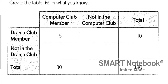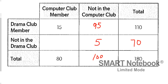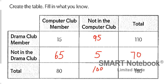The last question: we have to fill in the missing information. The total in the bottom right is 180, and drama club members total 110, so the missing number is 70. The computer club has 80, so not in the computer club must be 100. Of the 110 drama club members, 15 are in the computer club, meaning 95 are not. Then 95 + 5 = 100, and 15 + 65 = 80. The table is complete.